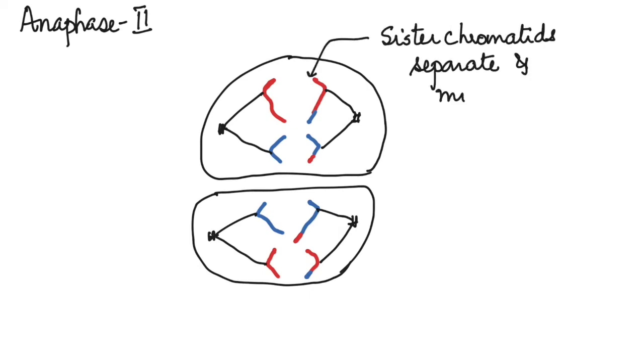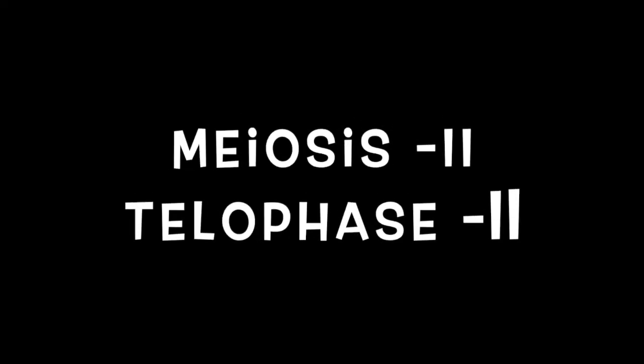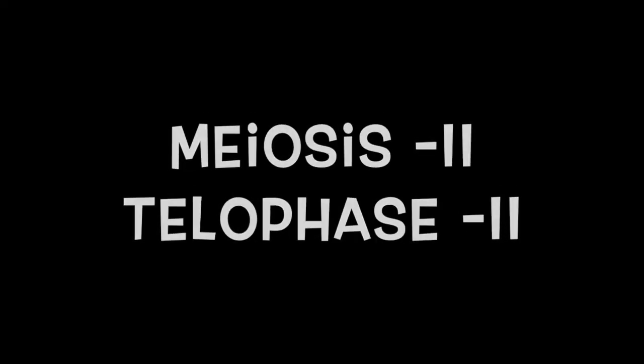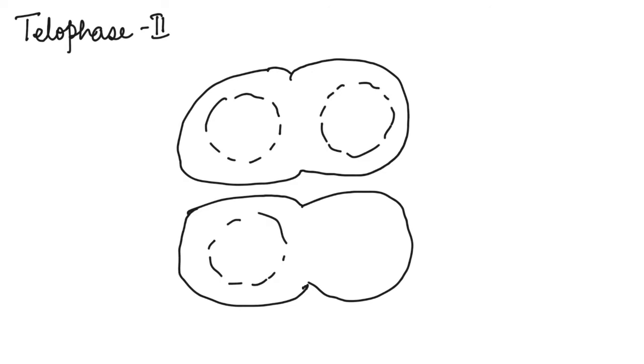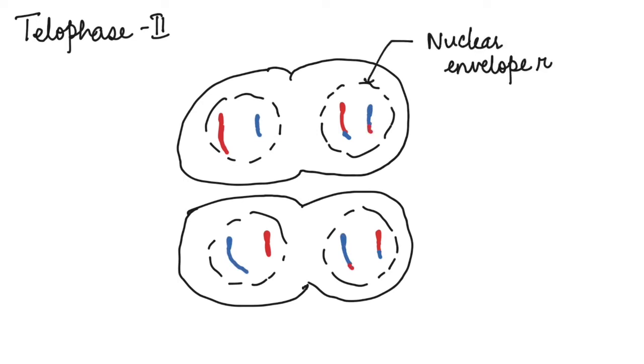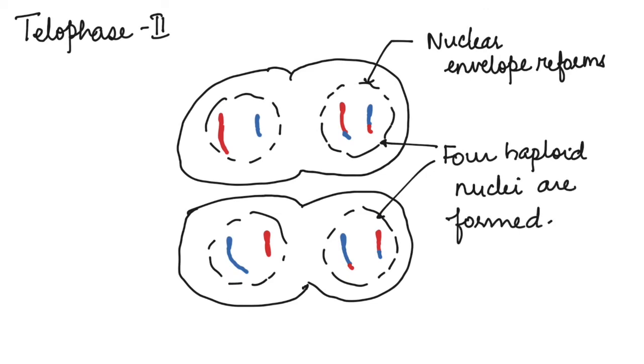Then anaphase 2 is followed by telophase 2. Now the chromatids which had separated during anaphase 2 have now reached the poles and the nuclear envelope starts developing. So here the cells that are formed are now completely haploid cells.